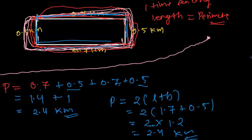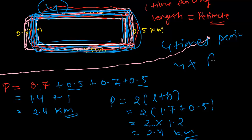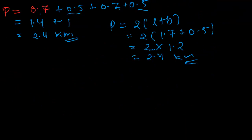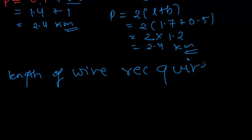Now the question says we need to fence it four times — one time completely, second time completely, third time completely, and fourth time completely. So it is just four times the perimeter. The length of the wire required equals four times the perimeter.